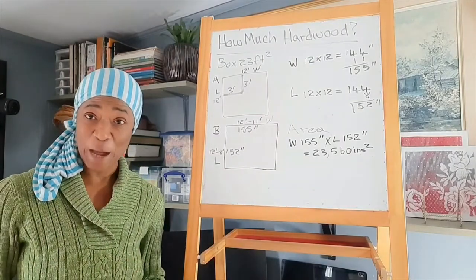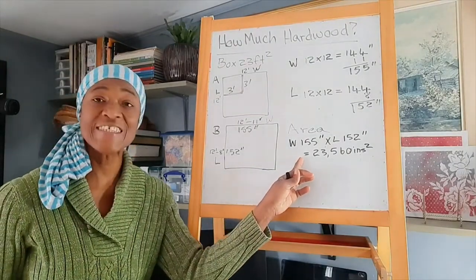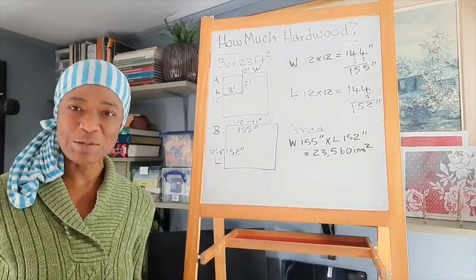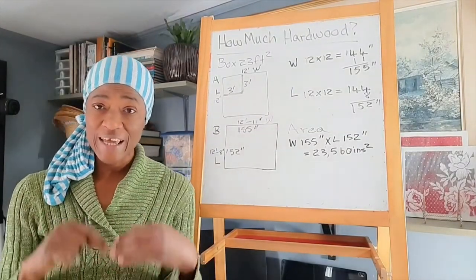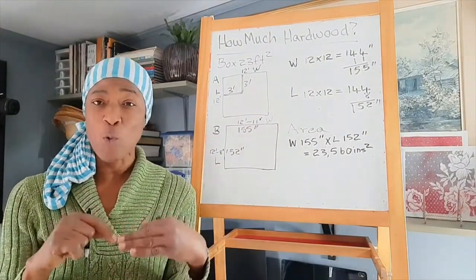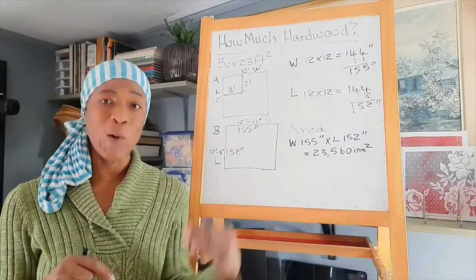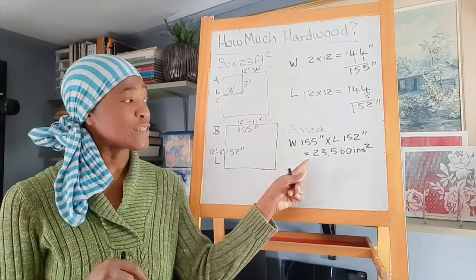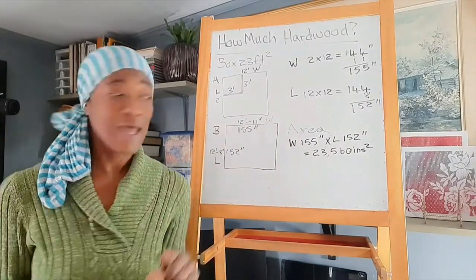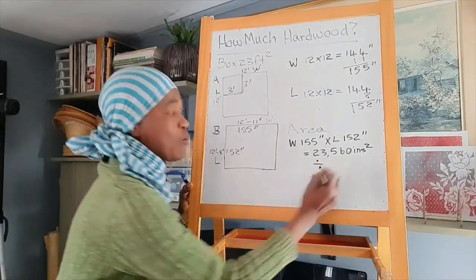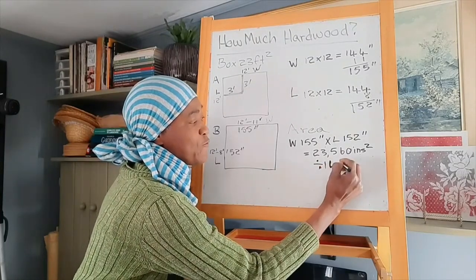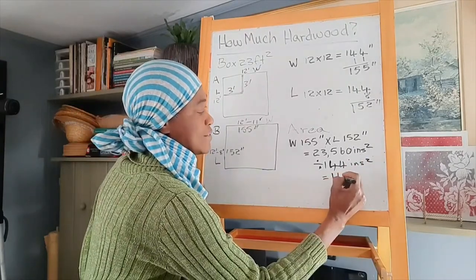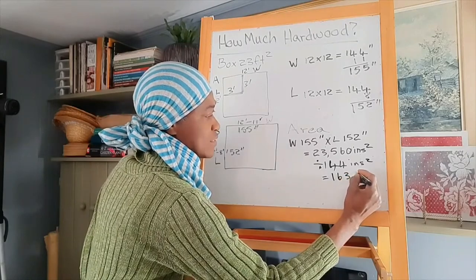The next step is to go ahead and convert the inches back into feet. And how do we do that? Because they're 12 inches in a foot, and we're looking at the square feet, we have to multiply 12 by 12, which is 144. So we'll take 23,560 and divide this by 144 inches squared.